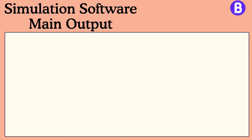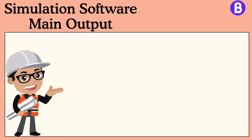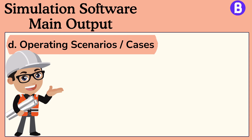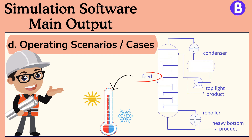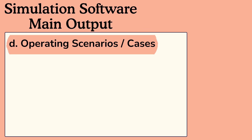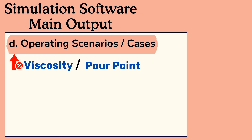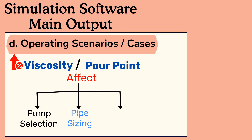When carrying out process simulation, a process engineer should consider all the plant's expected operating scenarios, also known as cases. For example, feed temperature may be higher in summer than in winter. This can affect lots of factors that shall impact downstream activities. Maybe we fear very high viscosity or reaching the fluid pour point. This can drastically affect pump selection, pipe sizing, and heat transfer equipment.